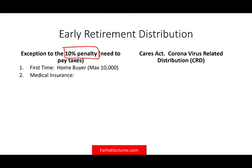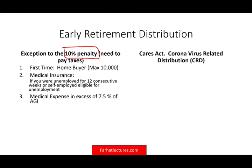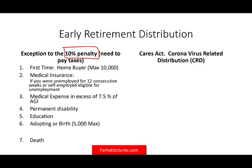Other prior-law exceptions to the 10% penalty include: purchasing medical insurance, being unemployed for 12 consecutive weeks or self-employed and eligible for unemployment, having medical expenses in excess of 7.5% of your adjusted gross income, being permanently disabled, education expenses, adoption or birth up to $5,000 maximum, and death.